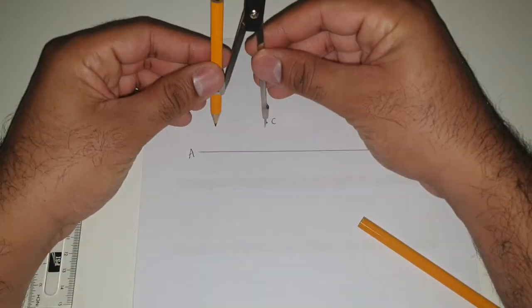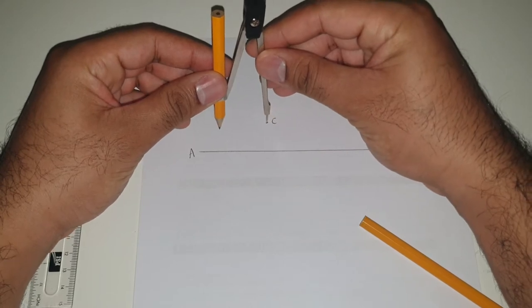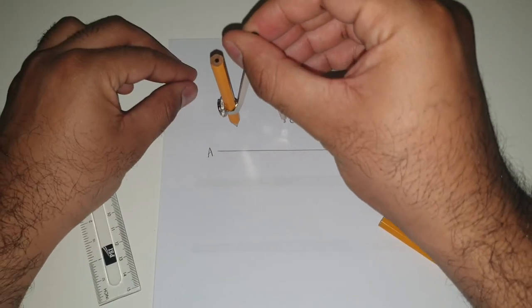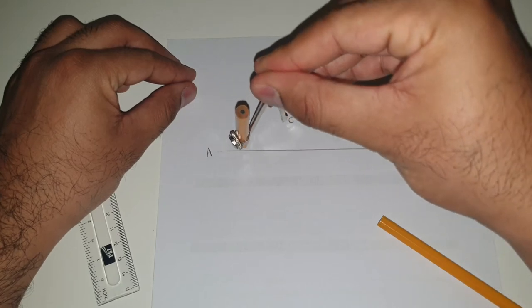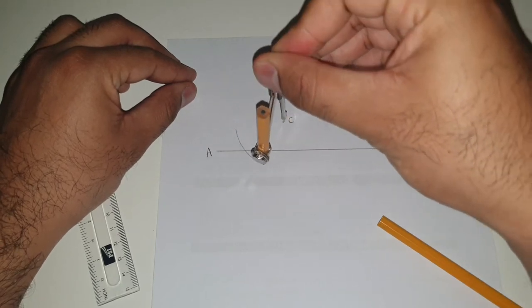The first thing you're going to do is take your compass and place it on point C, and draw part of a circle so that it intersects the line AB.